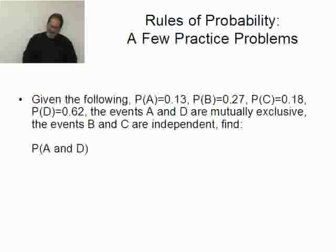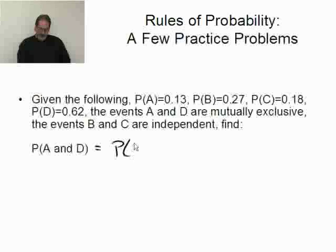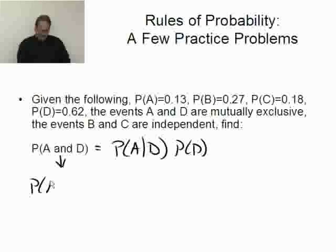What's the probability of A and D? A and D. Well, based on the general multiplication rule, this would be the probability of A given D. Oops. I wrote B. It said D. Sorry. Times the probability of D. By the way, for notation-wise, this is and. That's what that means.